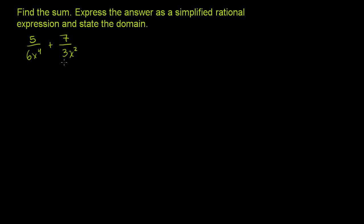When you look at it immediately, it might pop at you: 6 is divisible by 3, and x to the 4th is definitely divisible by x squared. So 6x to the 4th is definitely divisible by 3x squared, and of course, it's divisible by itself.